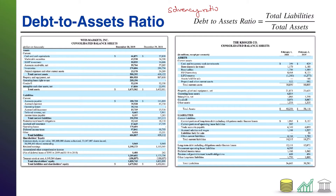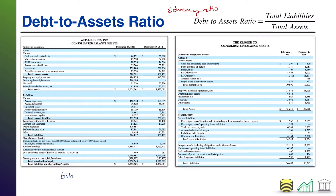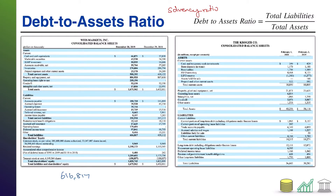First of all, on the left, we have Weiss Markets, a grocer. Total liabilities over total assets — we check that balance sheet. We have total liabilities right here at 616,817. If we look at total assets, we've got 1,675,562.